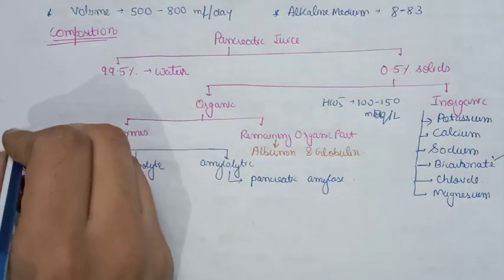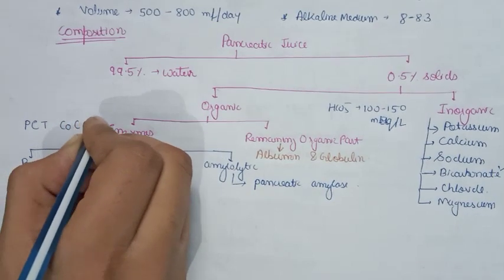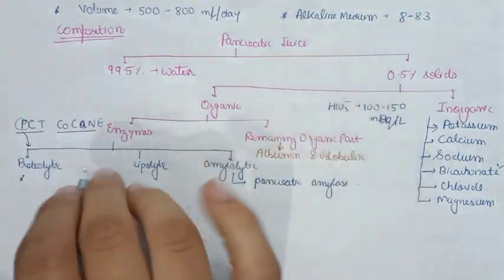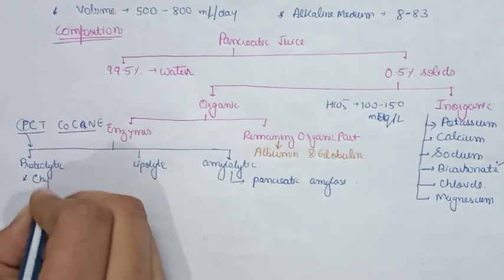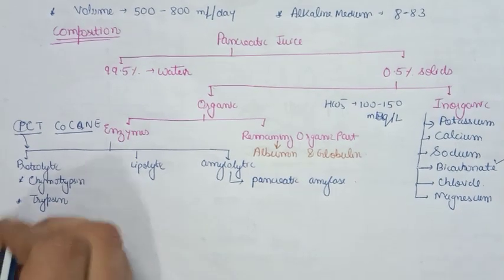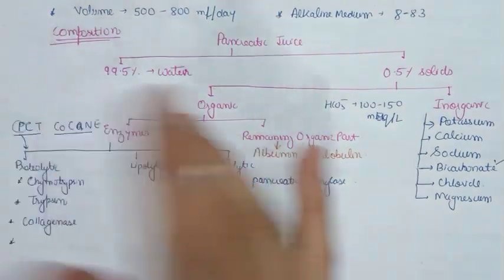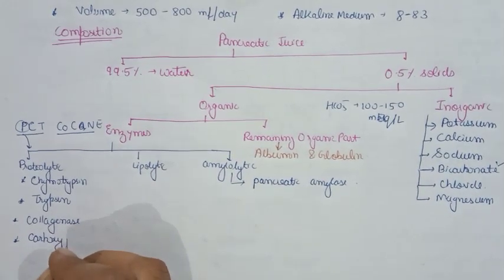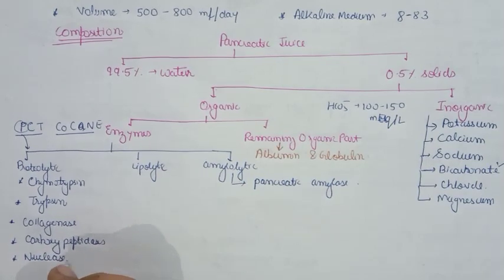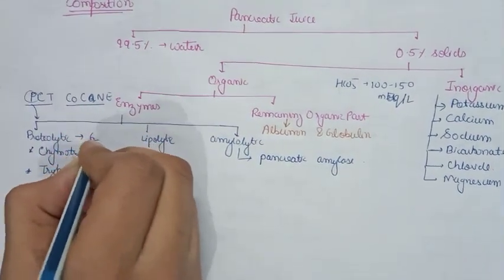A trick to remember the proteolytic enzymes is 'PCT cocaine': P for proteolytic group, C for chymotrypsin, T for trypsin, CO for collagenase, CA for carboxypeptidase, N for nucleases, and E for elastase — giving six proteolytic enzymes in total.